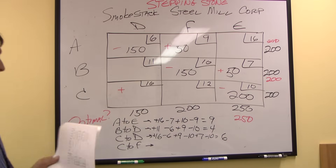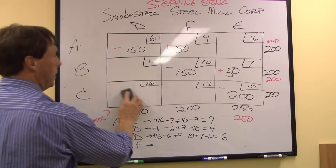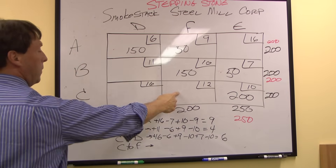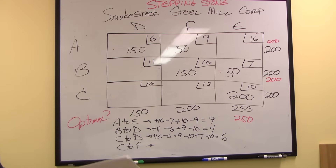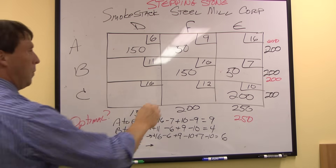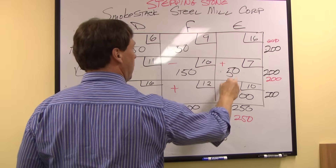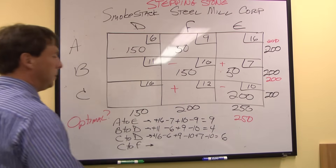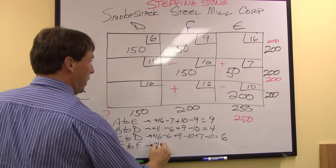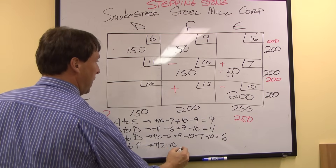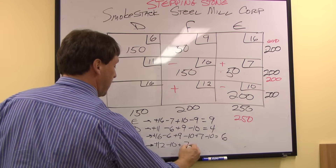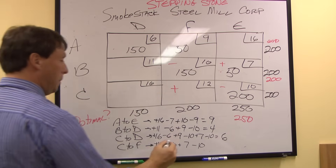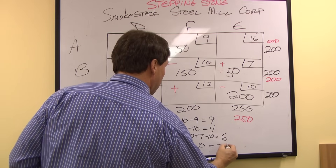Finally, I evaluate my last cell, which is Cleveland to Fort Worth, or C to F. I'm going to add one here, take one away, add one, take one away. What I have is plus 12, minus 10, plus 7, minus 10. So I have 19 minus 20, which is a negative 1.